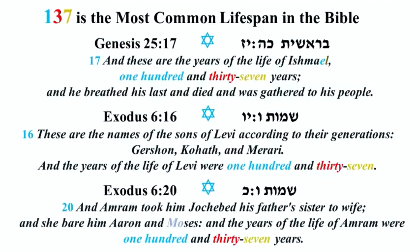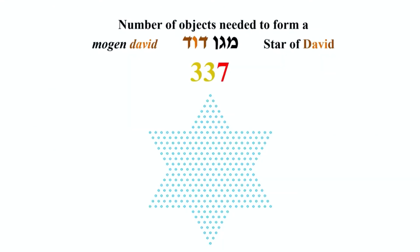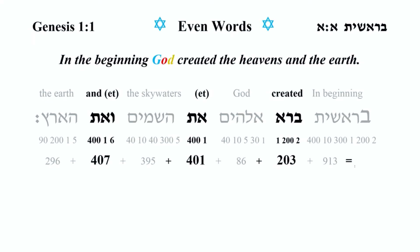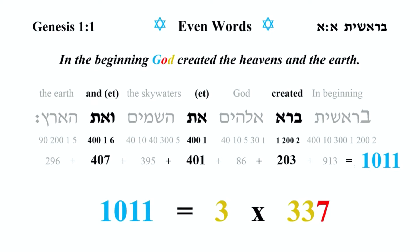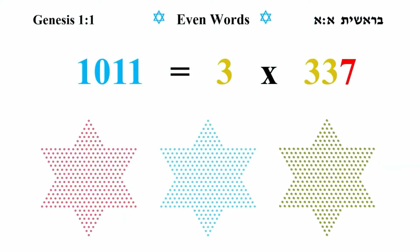I want you to keep in mind those Star of David numbers, especially 337. If we take the even words of Genesis 1:1 — which are Barah, Et, and Va'et — Barah is 203, Et is 401, and Va'et is 407. Adding them: 203 plus 401 plus 407 equals 1011. 1011 breaks down as 3 times 337. So if we take all of the even words in Genesis 1:1, you get 3 perfect Stars of David — very large Stars of David — all of them 337 points in this geometrical shape.